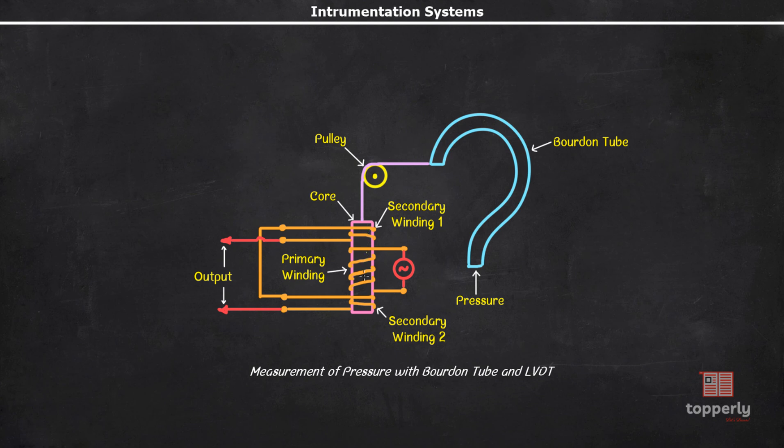So whenever there is displacement at the tip of the Bourdon tube, the amount of core inside the winding will be different. And as a result, we get an output voltage as a function of the input pressure. And since this output is electrical in nature, it can be fed to a digital instrument. So in this case, you can see that the sensing of physical quantities is done by this block. So this element, which is directly coupled to the system under study, is known as the primary transducer.